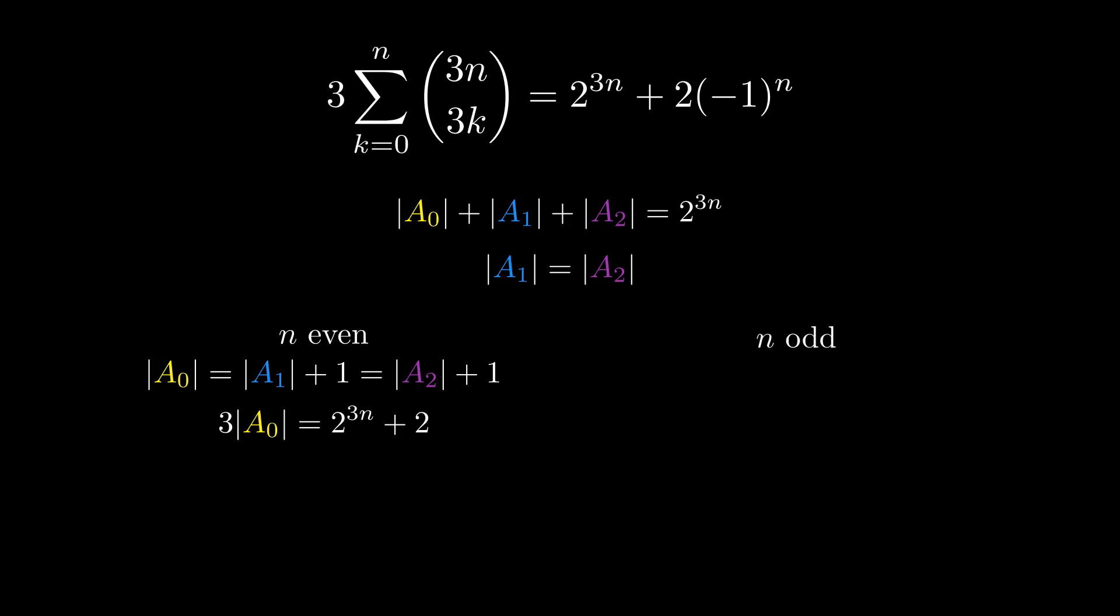When n is odd, it will turn out that set A0 is one smaller than A1 or A2, so this time 3 times the size of A0 is 2 to the 3n minus 2.